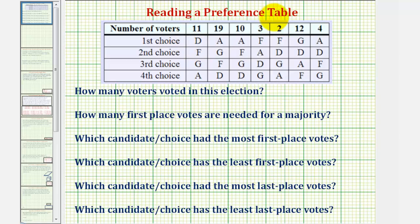In this example, we're given a preference table and asked several questions. Looking at the preference table, notice how the first row tells us the number of voters, while the second through fifth rows tell us the voters first, second, third, and fourth choices.